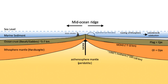Most oceanic spreading centers are not in the middle of their hosting ocean basins but regardless are called mid-ocean ridges. Mid-ocean ridges around the globe are linked by plate tectonic boundaries to appear like the seam of a baseball. The mid-ocean ridge system thus comprises the longest mountain range on Earth, reaching about 65,000 kilometers.